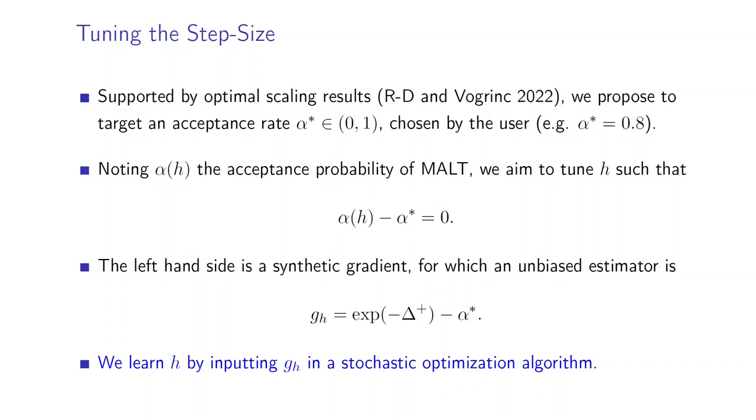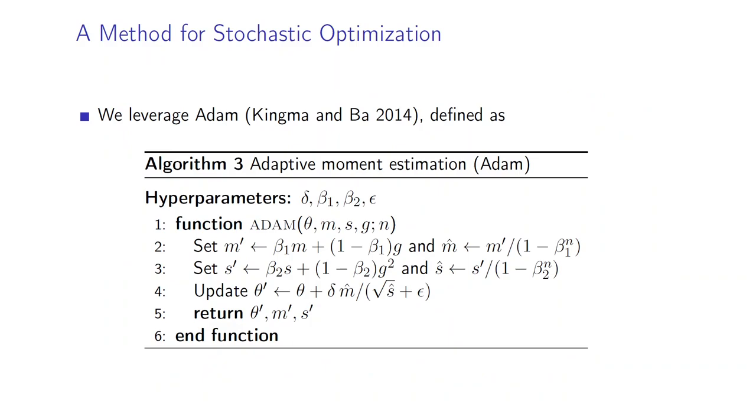Supported by optimal scaling results from our first paper, we propose to target an acceptance rate α* when tuning the step size. By denoting α(h) the acceptance probability of MALT, we aim to tune time step h such that α(h) is equal to α*. The left-hand side of this equation here can be interpreted as a synthetic gradient for which we have an unbiased estimate out of the algorithm defined as g_h. So we learn h by inputting simply g_h in a stochastic optimization algorithm.